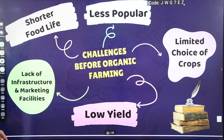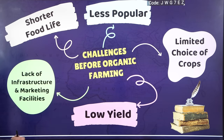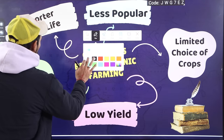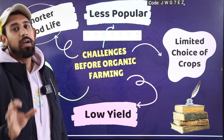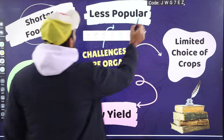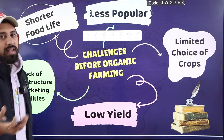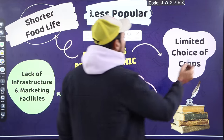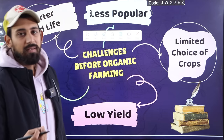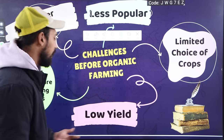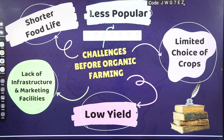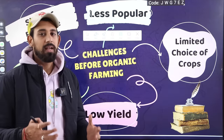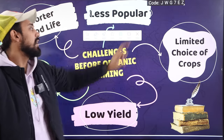Challenges of organic farming include very short shelf life of food (no chemical preservatives), low awareness among people, limited choice of crops that can be grown organically, low yield, and lack of infrastructure and marketing facilities for organic produce.